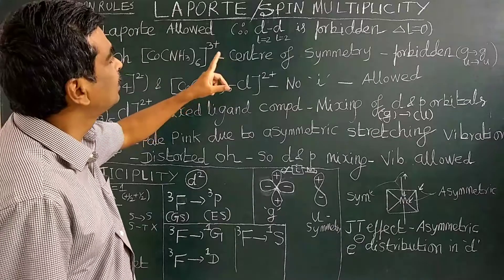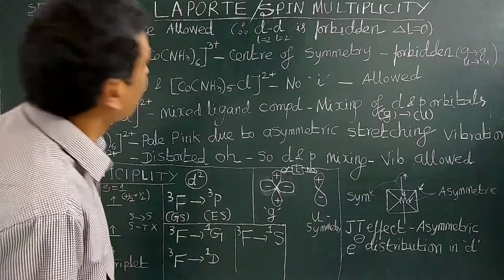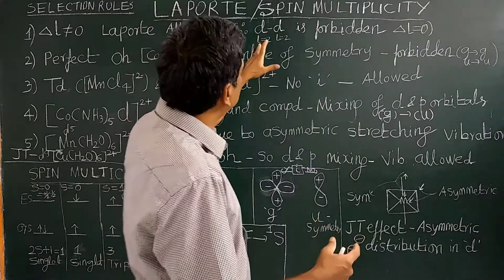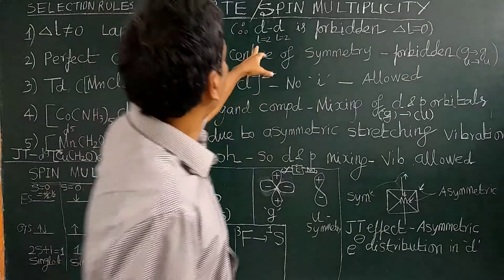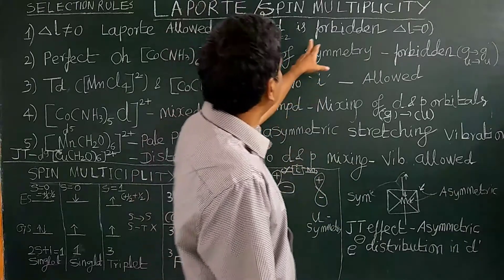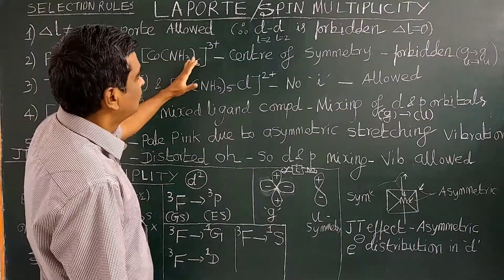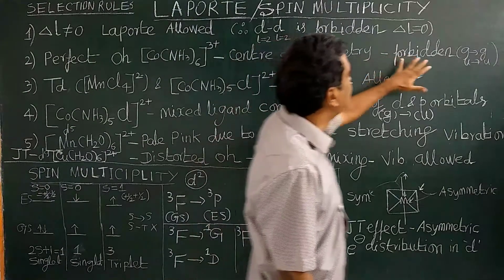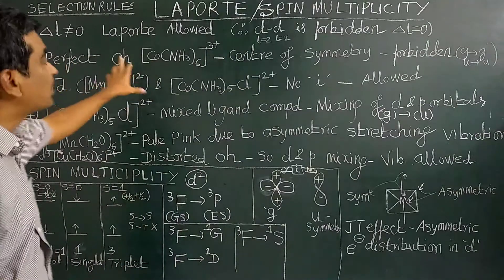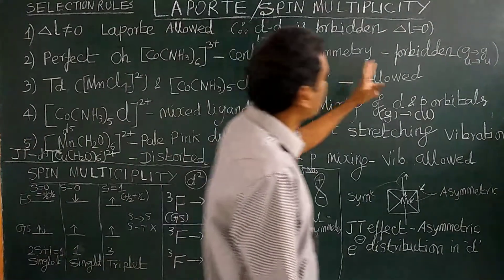Transitions involving a change in quantum number are Laporte allowed. However, in d-d transitions there is no change in the orbital quantum number, therefore it is Laporte forbidden. For a perfect octahedral complex where there is a center of symmetry — an inversion center — d-d transition is forbidden because of the perfect octahedral symmetry with center of symmetry. Again it is Laporte forbidden.